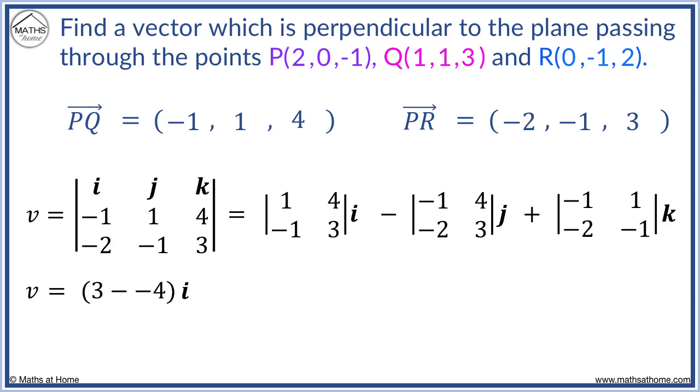Now we subtract -1 times 3, equals -3, and we subtract -2 times 4, equals -8.